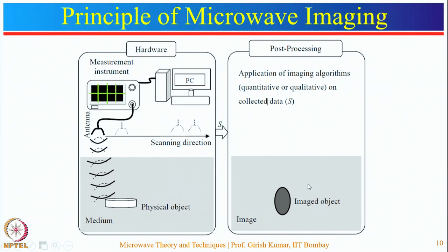Microwave imaging has applications in various areas: medical imaging, non-destructive testing and evaluation, through-wall imaging and structural health monitoring, and concealed weapon detection at security points. We will discuss these applications one by one.